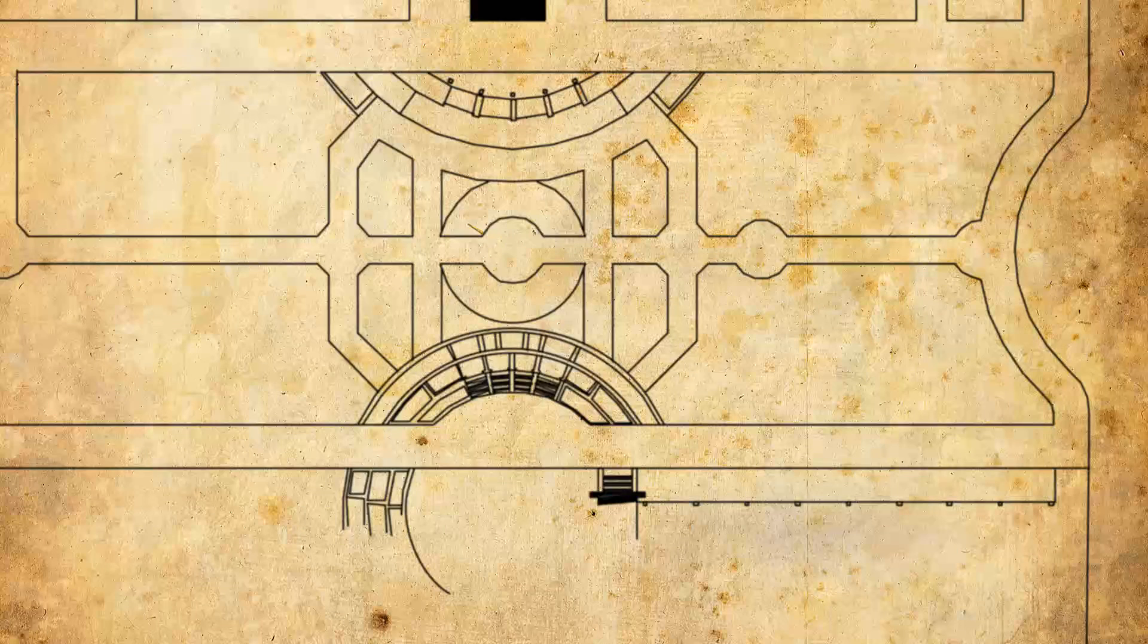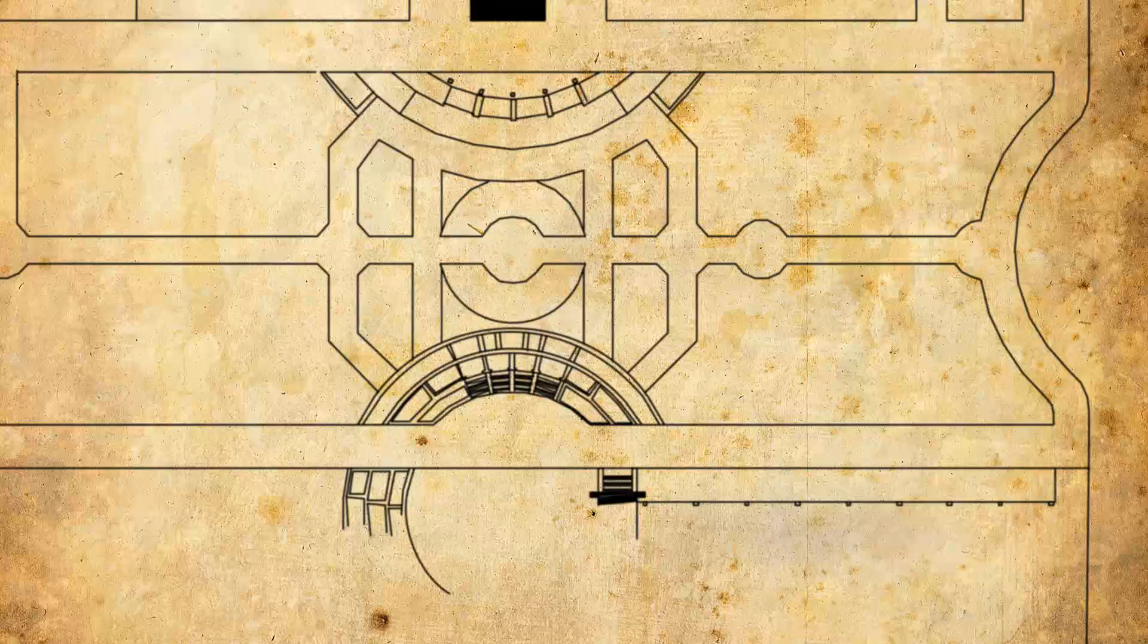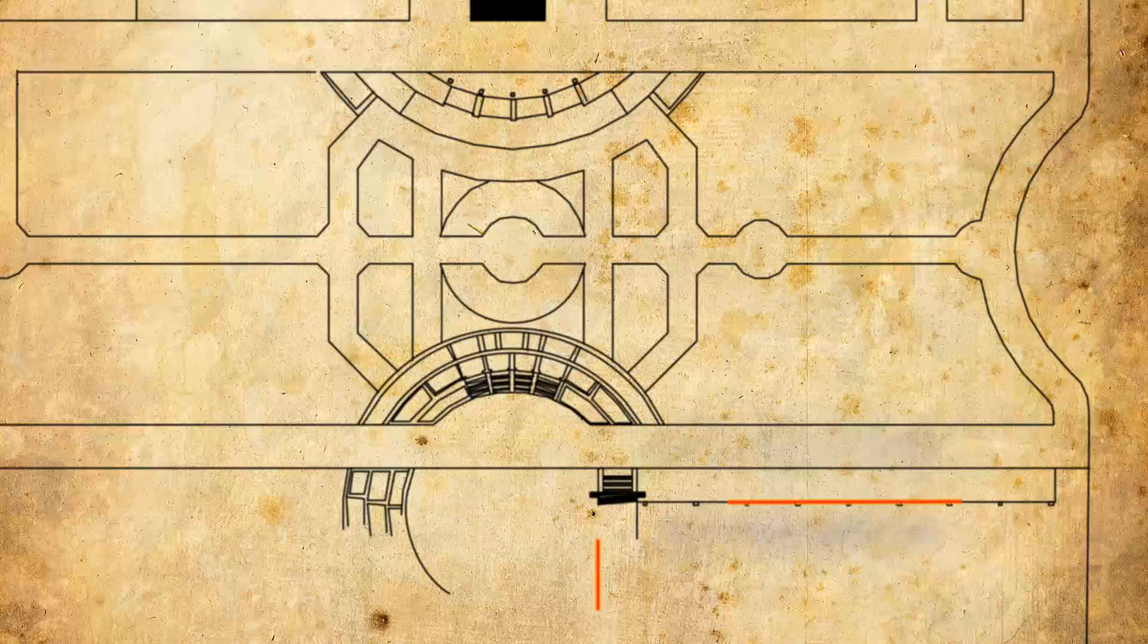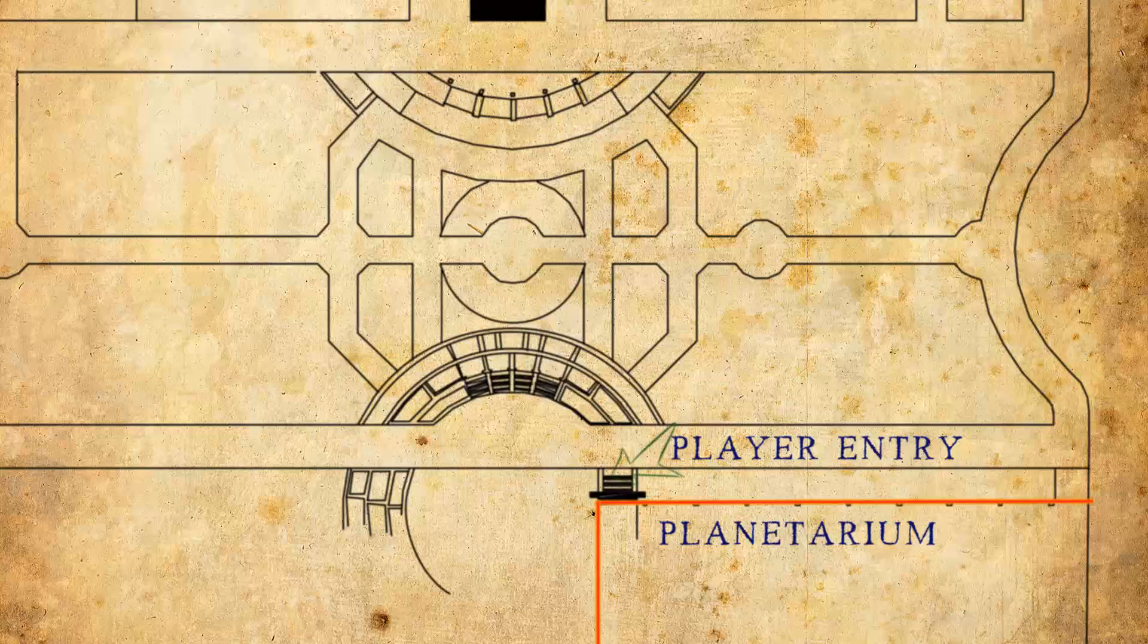Now listen up, ye landlubbers and scallywags. Here be the rules on how to play the game. The south border of the field, and where ye be making your entry, is the building of the stars. What black magic can shrink the heavens to a single room I know not, but it concerns me little.